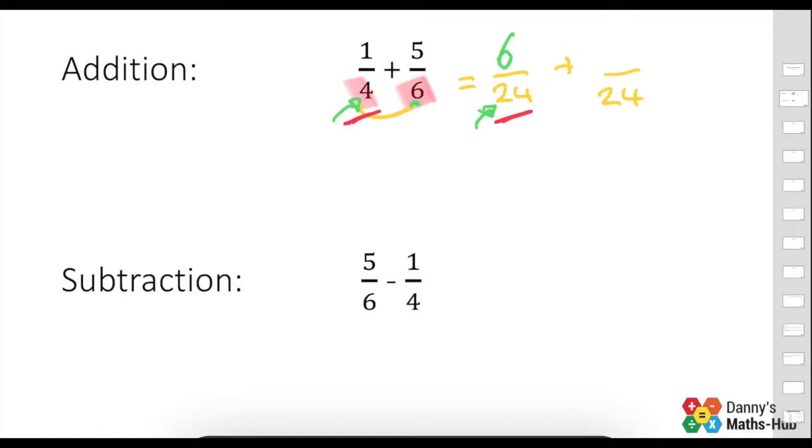Then, if we now look at this one, what did we have to times the 6 by to get our 24 here? Well, we had to times it by this 4.